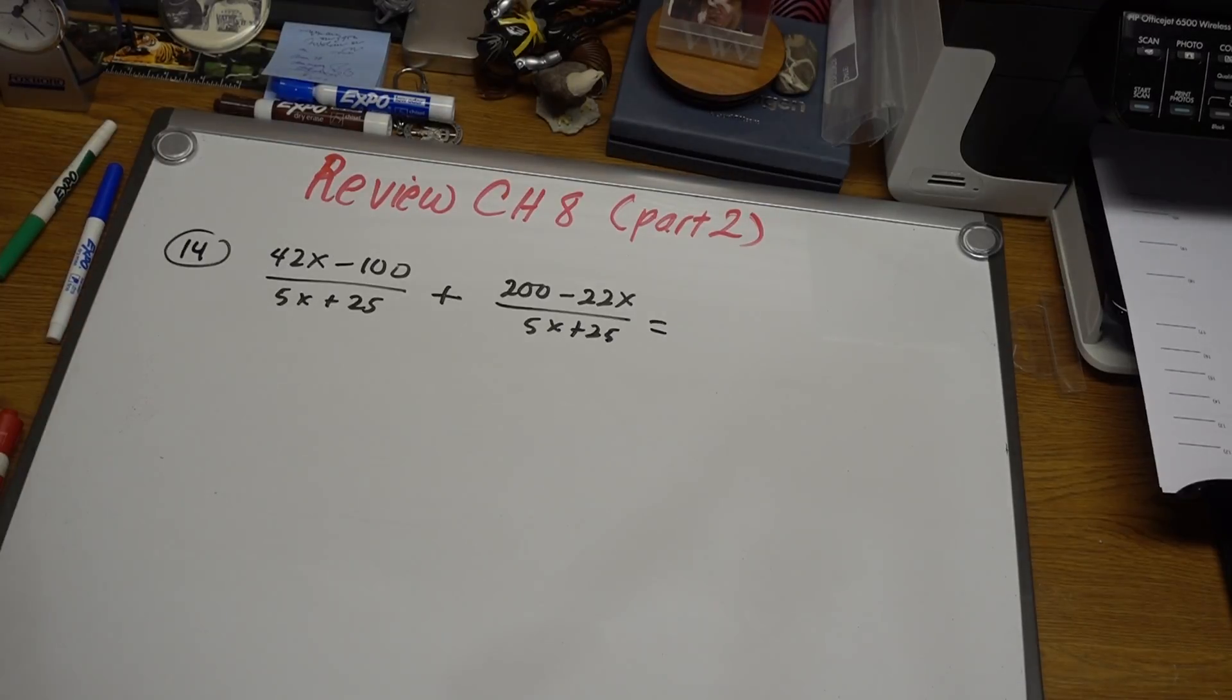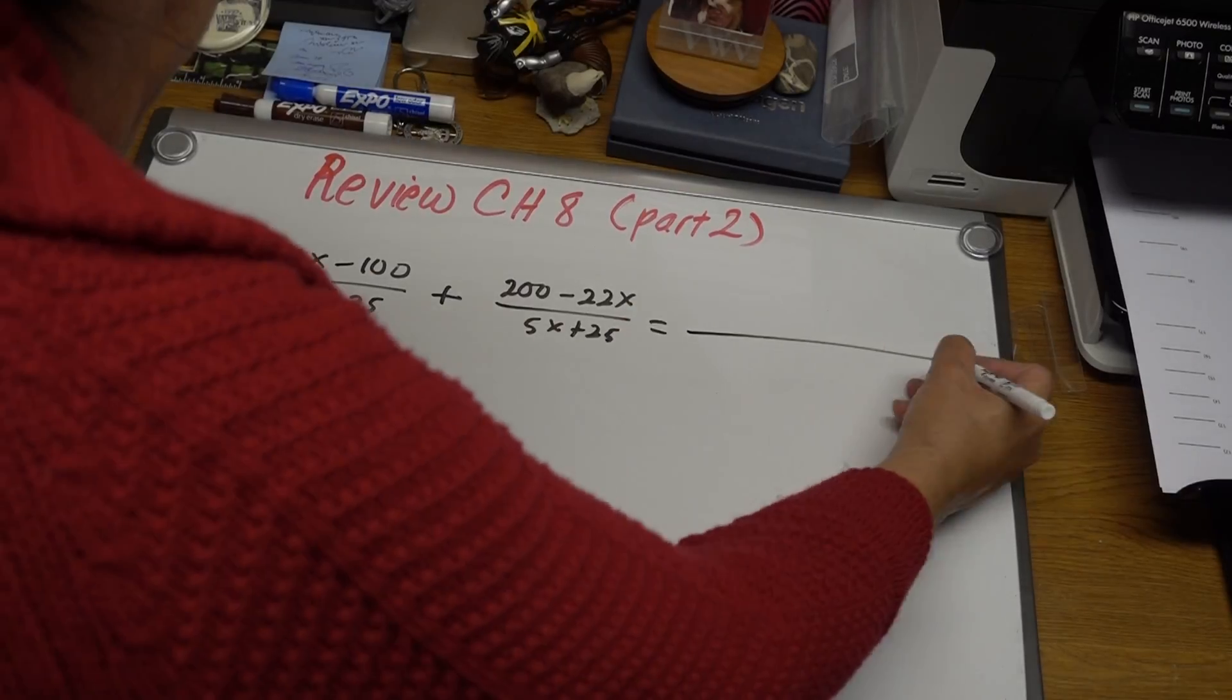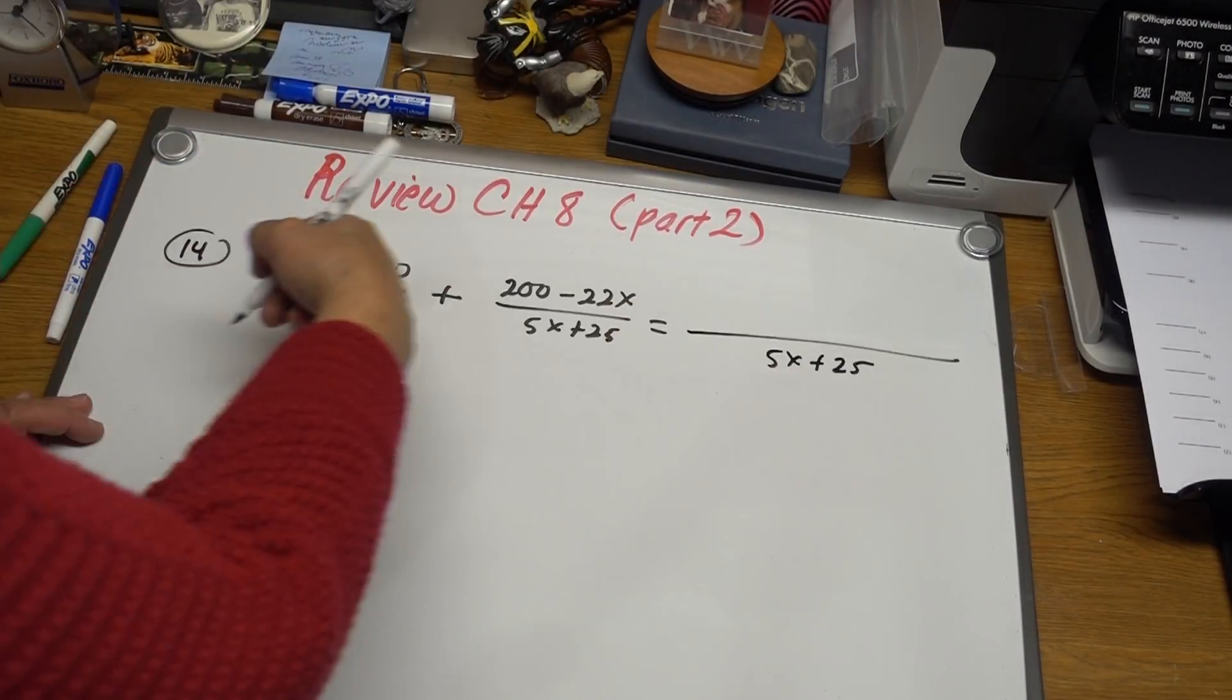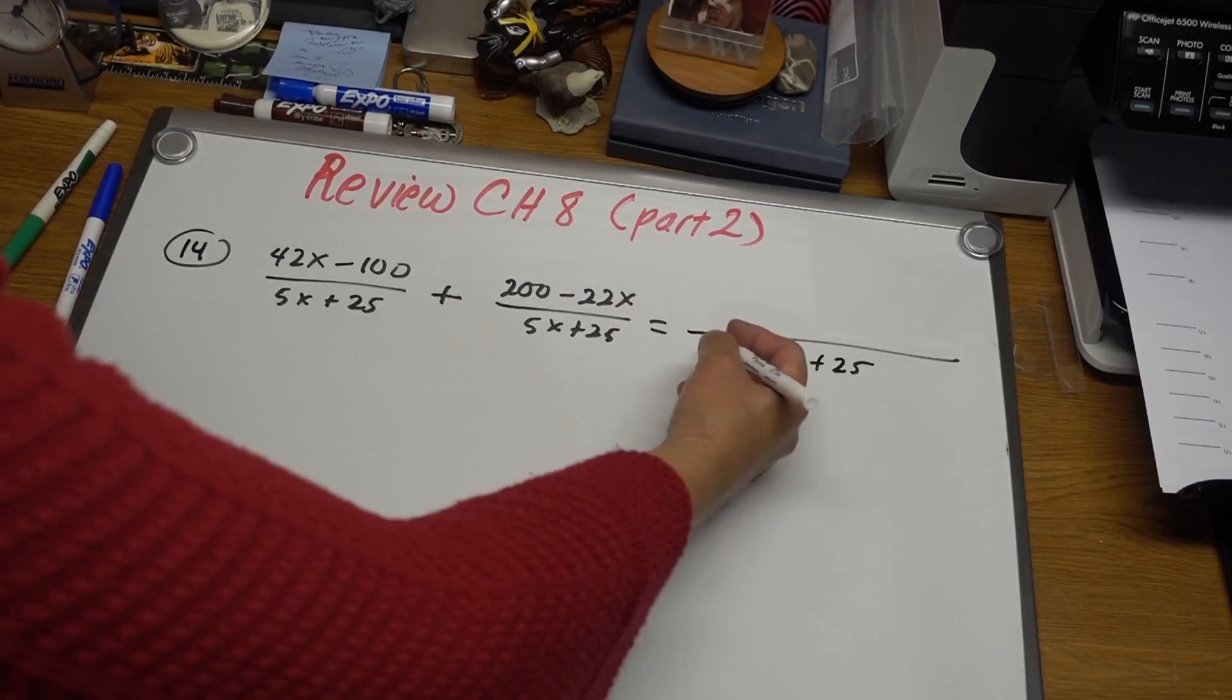Remember, for addition or subtraction, you need to check the denominators. And if you have a common denominator, you just have to rewrite it: 5x plus 25. And then we're going to add these two expressions.